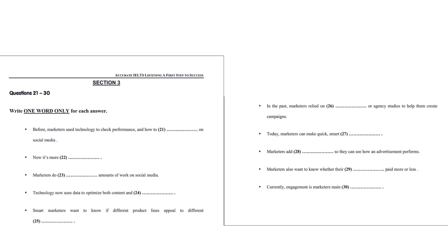Now listen and answer questions 26 to 30. The other area is content. What types of content are the most engaging, and what actually influences the audience? If you're creating a campaign for a brand or product, it's important to know who you're speaking to, which users will be most engaged, and the users who will drive the success of this campaign. In the past, this was done by guesswork or agency studies, but today it's almost happening in real time. Marketers can have a view of their audience almost immediately, allowing them to make quick, smart decisions. Marketers are constantly searching for technologies that help them prove they're making the right decisions.